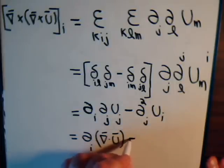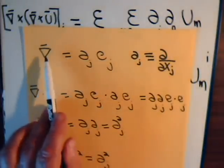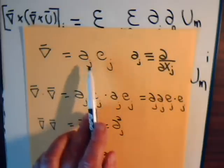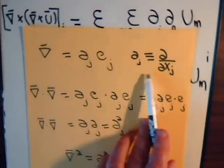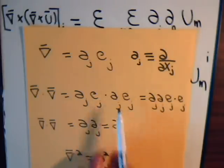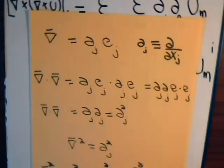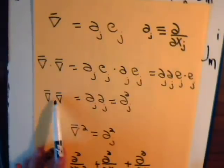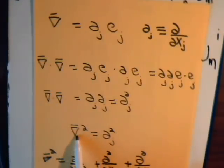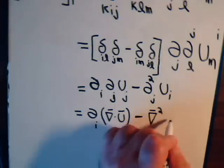Then we have minus partial j squared. Now, remember, I think it was from video 14, where we wrote the del operator like this, with this partial differentiation symbol, where this denotes this. Now, if we have del dot del, that would be this dot this. This, of course, is just one. So del dot del is just this squared, taking the partial derivative twice, and del dot del is usually designated like this, del squared. So here we have del squared ui.